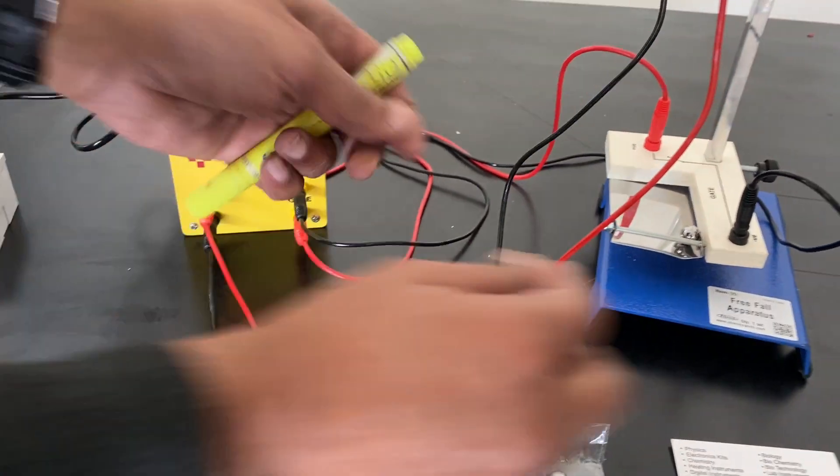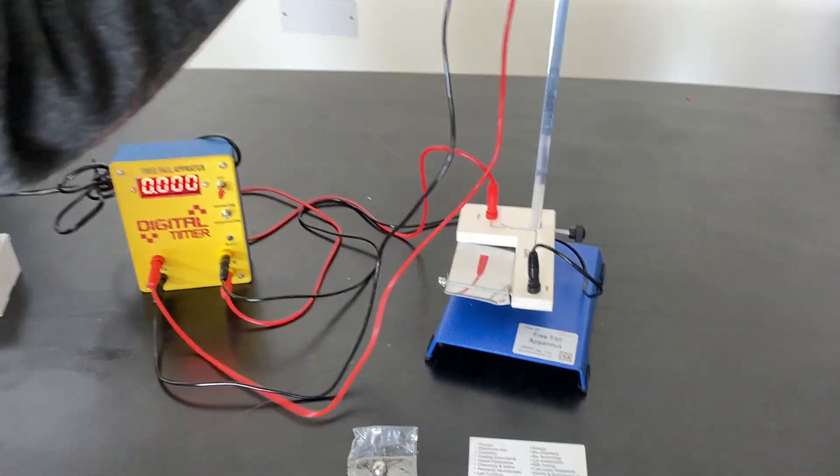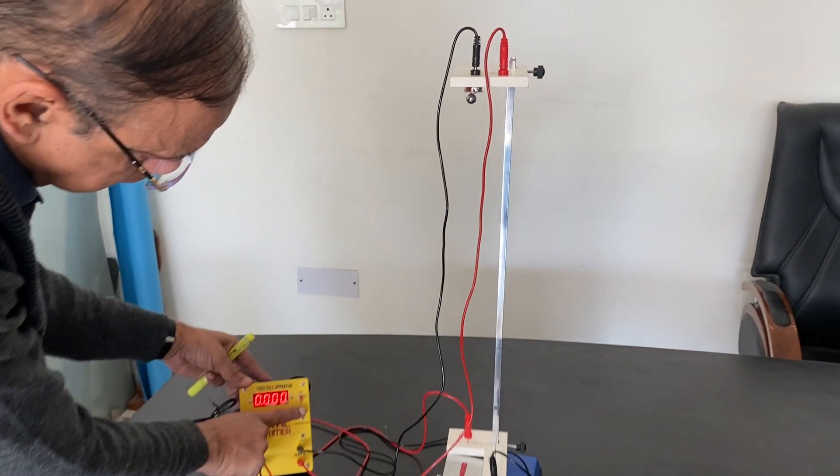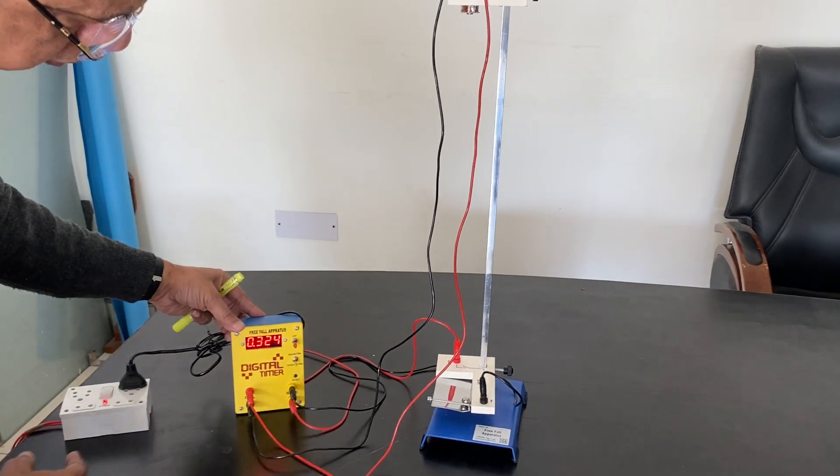Connect two connections. Let's see once again. See this. Connection and then demagnetize. 0.324.